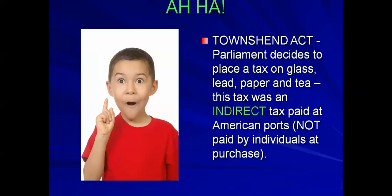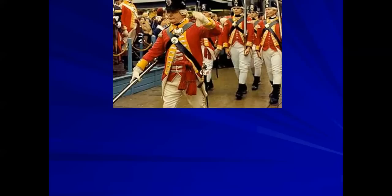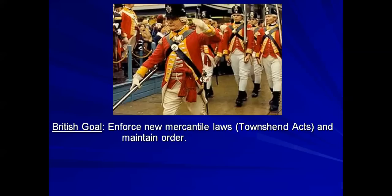The British government decided that since a direct tax had caused such a reaction, they'd go back to an indirect tax — which they did with the Townshend Acts. It was a tax on many products, but indirect: not paid by individuals at the time of purchase, but at the time of import. However, at this point it didn't matter what kind of tax it was — the colonists still argued that without representation in Parliament, any tax is not welcome: taxation without representation is tyranny. So the British government sent more troops to enforce the Townshend Acts, and eventually decided to repeal them.